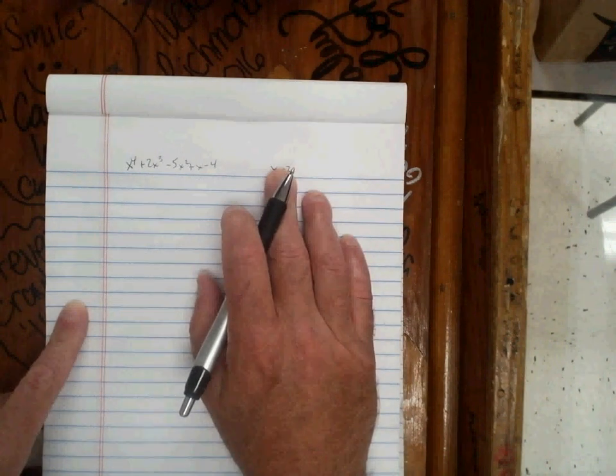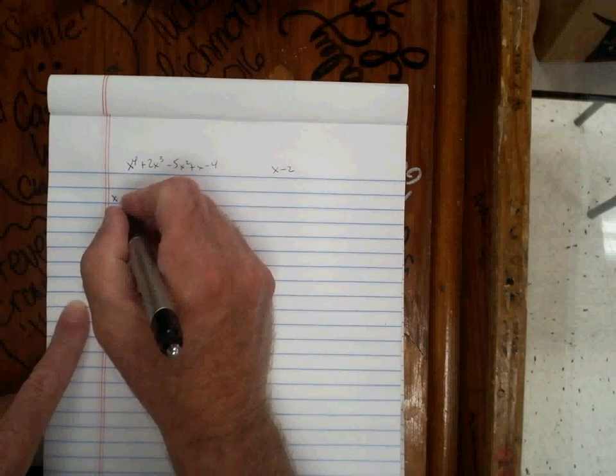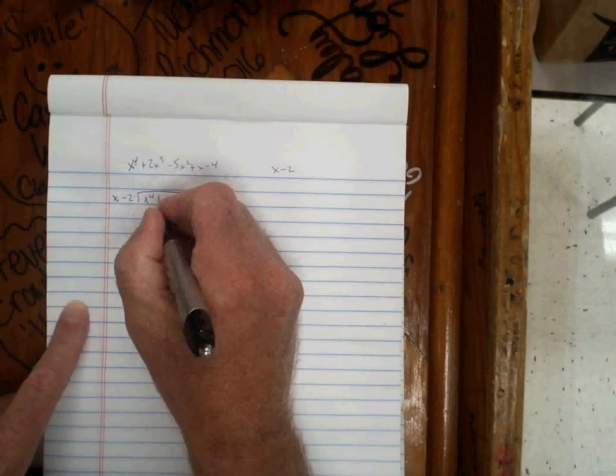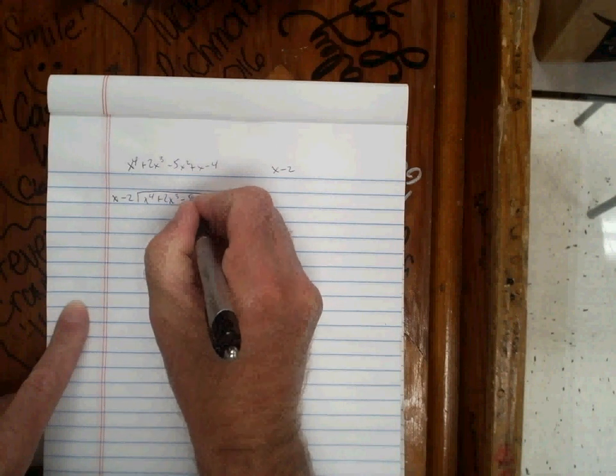So we can set up that division as x minus 2 goes into x to the 4th plus 2x cubed minus 5x squared plus x minus 4.